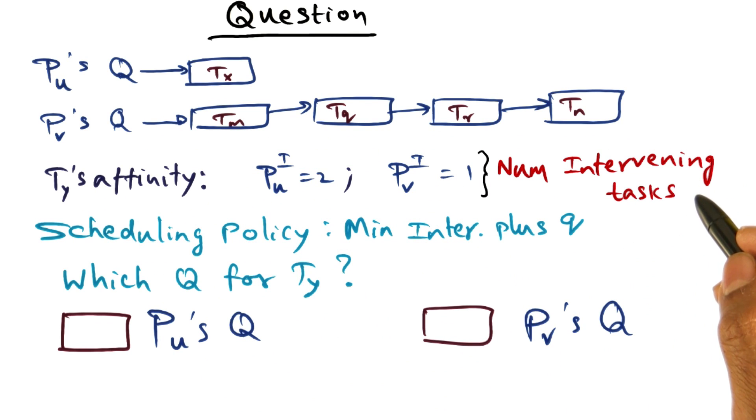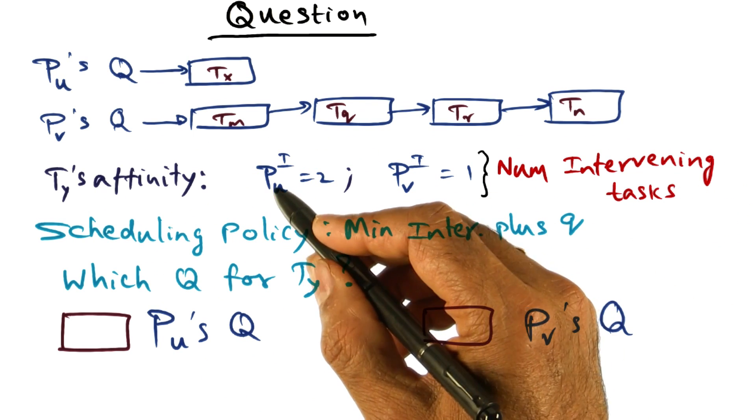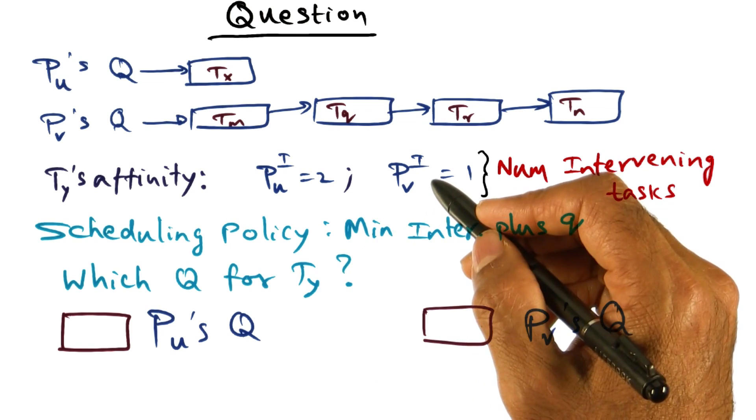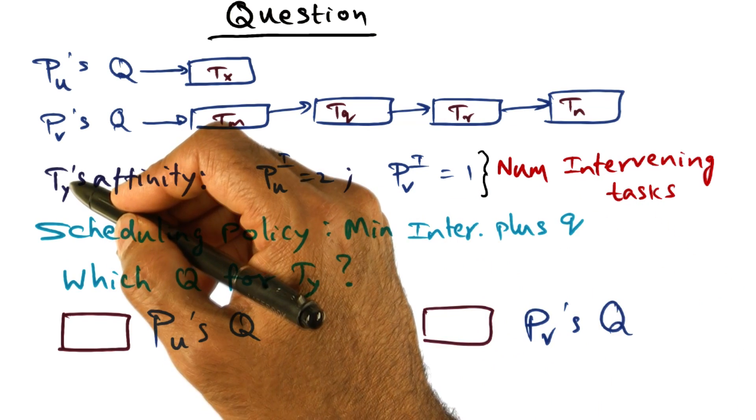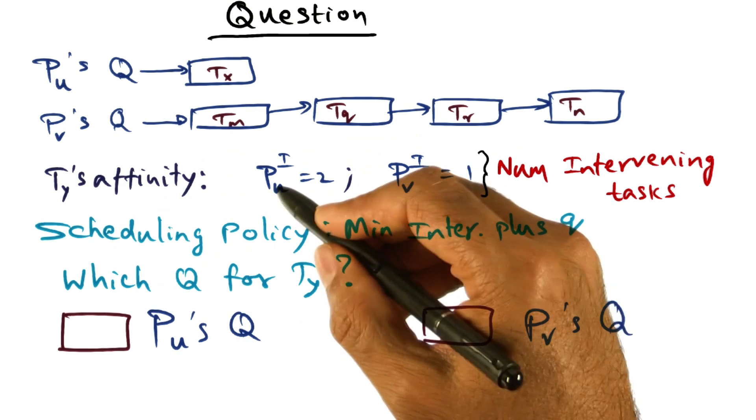There's a number of intervening tasks that have run on the processes P_u and P_v respectively, since the last time T_y had a chance to run on these processes.